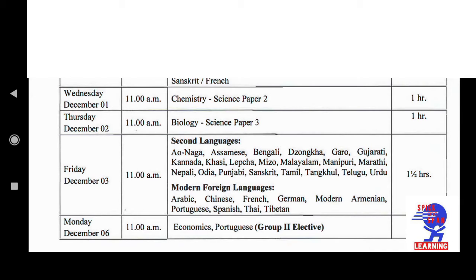After Biology, the next exam is on Friday, 3rd December, at 11 a.m. This is for Second Languages. Languages included are: Aonaga, Assamese, Bengali, Dzongkha, Garo, Gujarati, Kannada, Khasi, Lepcha, Mizo, Malayalam, Manipuri, Marathi, Nepali, Odia, Punjabi, Sanskrit, Tamil, Tangkul, Telugu, Urdu, and Modern Foreign Languages. Whoever has opted for a second language, their exam is on 3rd December.